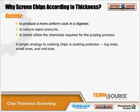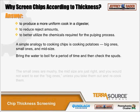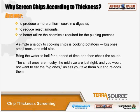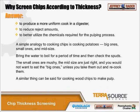A simple analogy to cooking chips is like cooking potatoes — big ones, small ones, and mid-sized. Bring the water to the boil for a period of time and check those spuds. The small ones are mushy, the mid-sized are just right, and you would not want to eat the big potatoes unless you take them out and recook them. This is much the same with chips — you want a uniform-sized chip so when you cook them, they all come out the same.